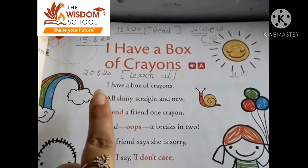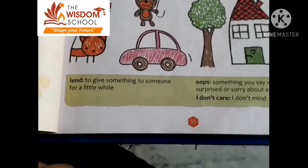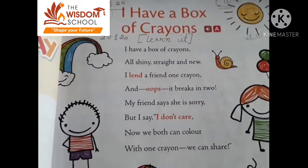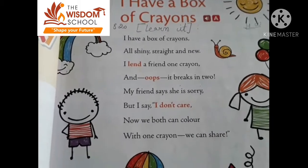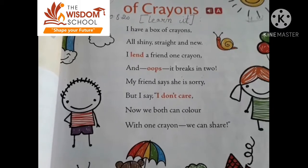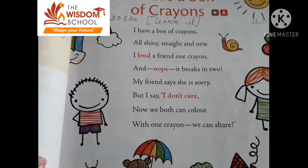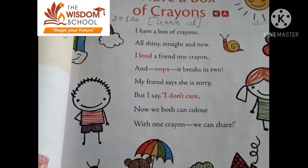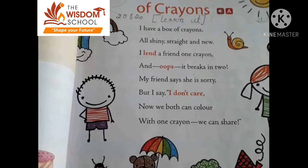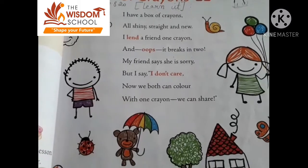Now we are doing our next poem revision — 'I have a box of crayons.' Open page number 55. I have a box of crayons, all shiny, straight and new. Mere paas kya hai? Crayons ka box. Kaisa hai? Sabhi shiny hai, straight hai, and new hai. I'll lend a friend one crayon — maine apne friend ko ek crayon use karne ke liye diya. And oops, it breaks into two! Arre, ye toh doh ho gaya.